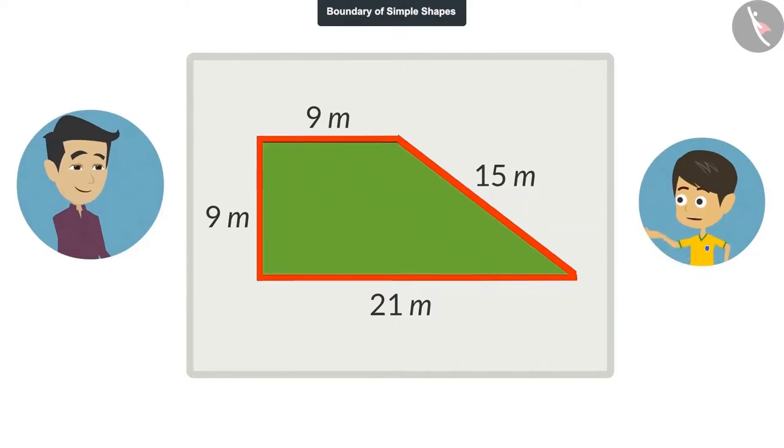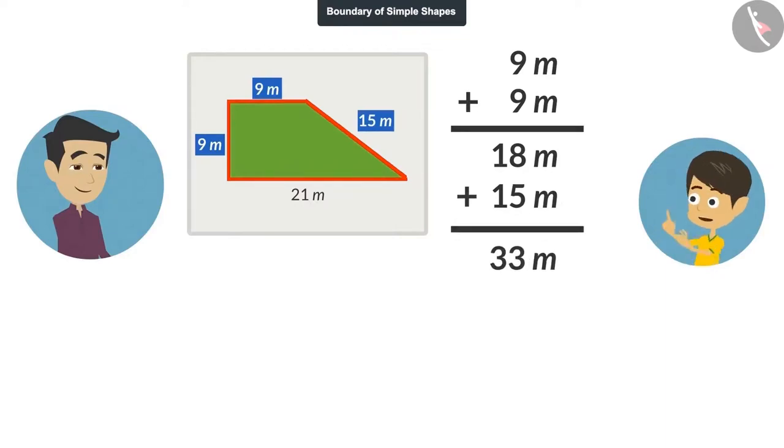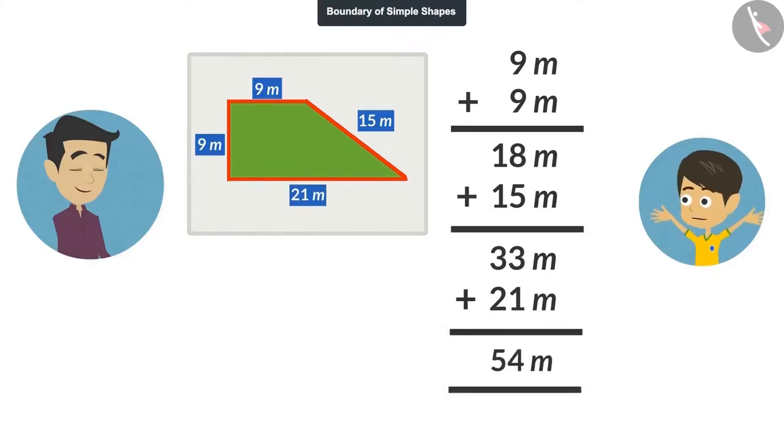Okay, now I know the length of all the lines. By adding these, I will get the length of the field's boundary. If you add 9 meters to 9 meters, the answer will be 18 meters. If we add 15 meters to 18 meters, the answer will be 33 meters. And if we add 21 meters to 33 meters, the answer will be 54 meters. That means the boundary of this field is 54 meters.